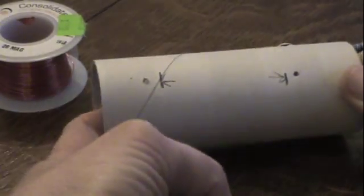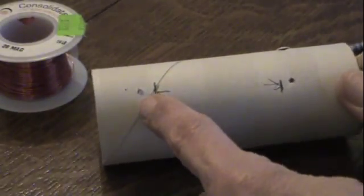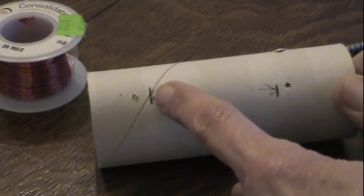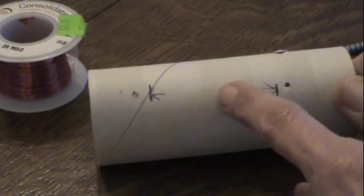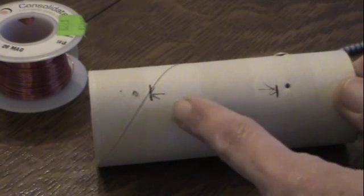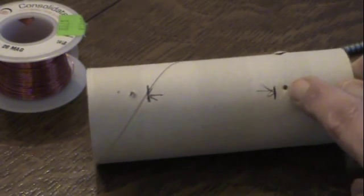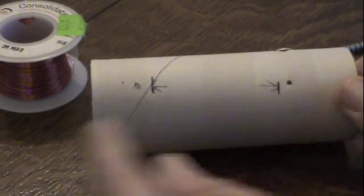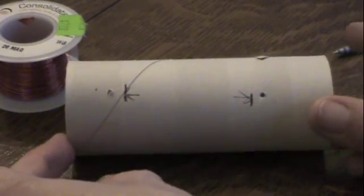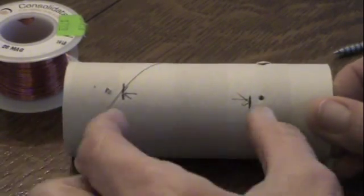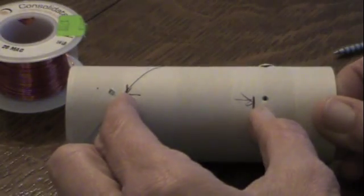The magnet wire is going to thread in through here and come out this hole. I'm going to wind continuously with the sides of the wire touching, then run the end into this hole. I'll have two wires on either end of the toilet paper roll and the coil spanning these two points.